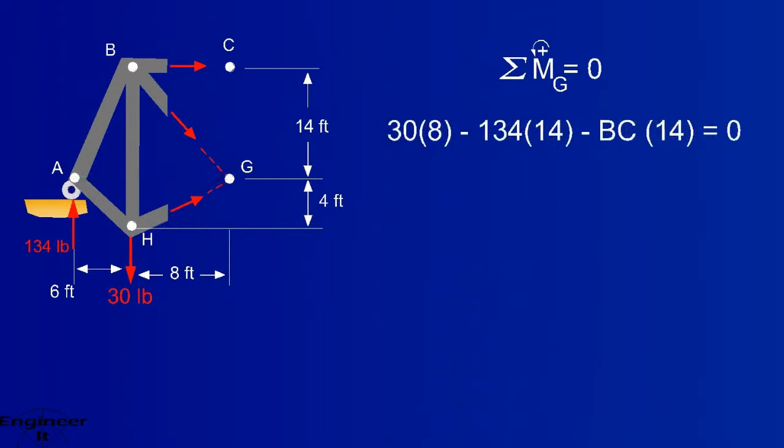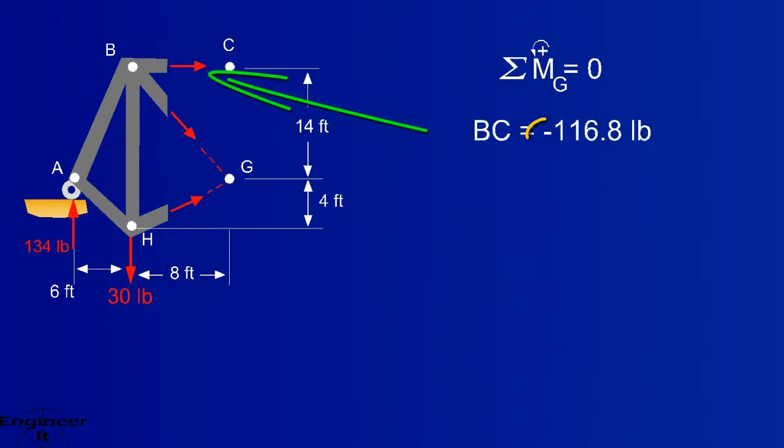The equation will look like this, and BC equals negative 116.8 pounds. All the negative means is that the force is drawn in the wrong direction, and it should be flipped. This force is pushing onto member BC, so it's compressing the member. That way of thinking makes it easier to identify members in compression or tension.